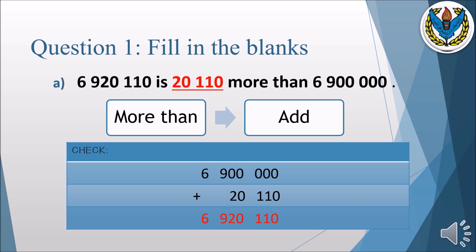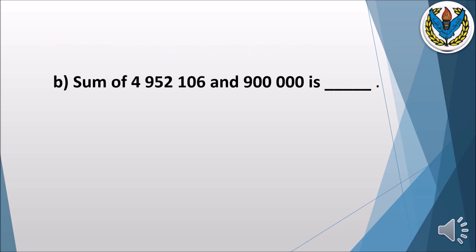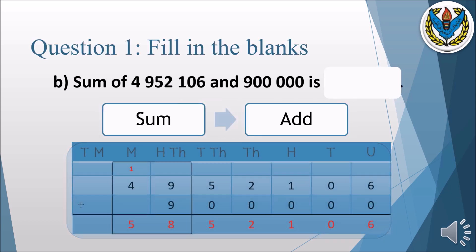Part B: the sum of four million nine hundred and fifty two thousand one hundred and six and nine hundred thousand. Sum means we have to add these two numbers. First, make the place value table and place all digits at their correct place value. From the units place till the ten thousands place, we have zeros being added to fifty two thousand one hundred and six, so those remain the same. At hundred thousands and millions, forty nine plus nine gives us fifty eight. So our answer is five million eight hundred and fifty two thousand one hundred and six.